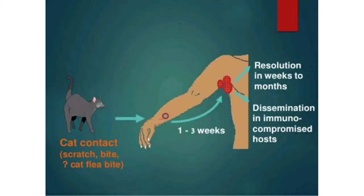After cat contact — whether a scratch, a bite, or a cat flea bite — once bacteria or saliva enters a wound on your hands, after one to three weeks you develop lumpy nodules that generally resolve within weeks or sometimes months. Sometimes dissemination — that is, spreading — occurs, generally in immunocompromised hosts such as HIV patients.